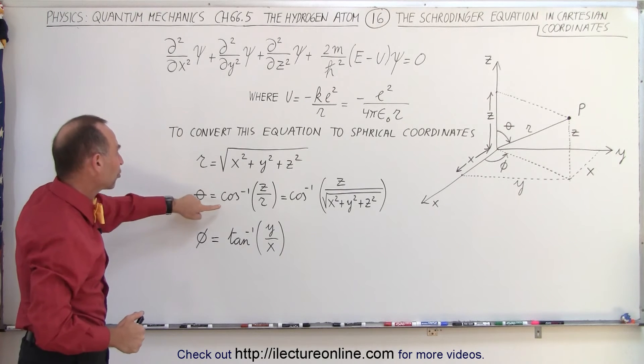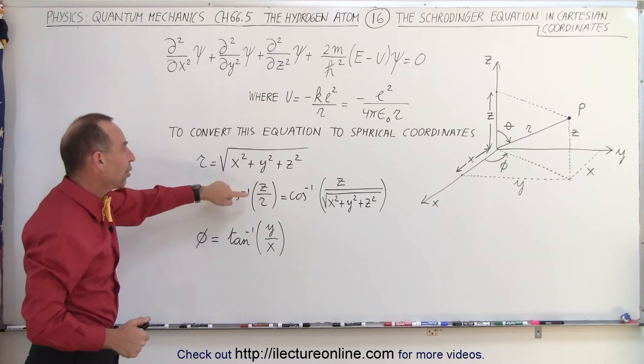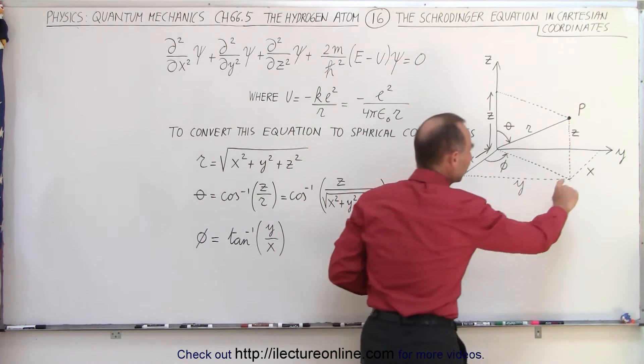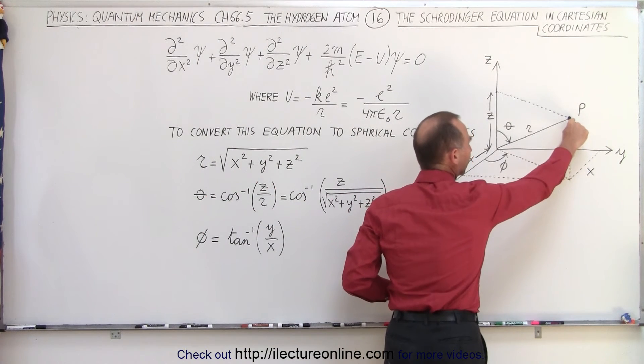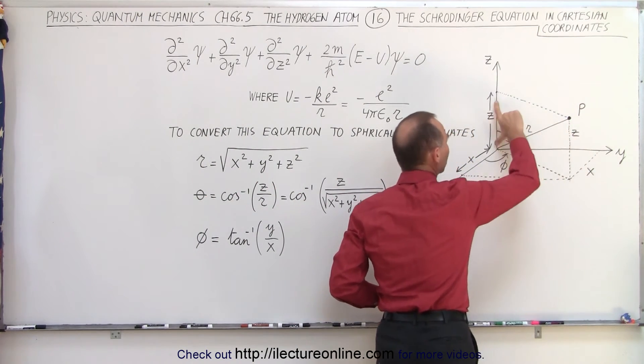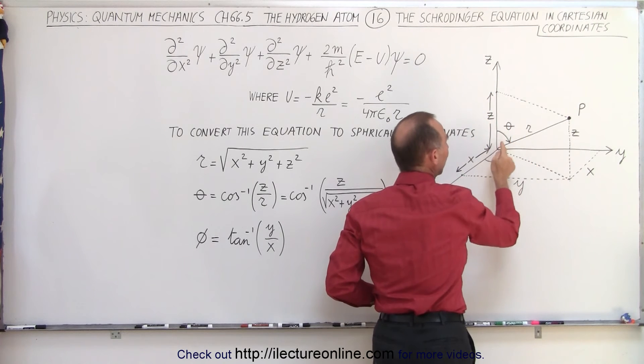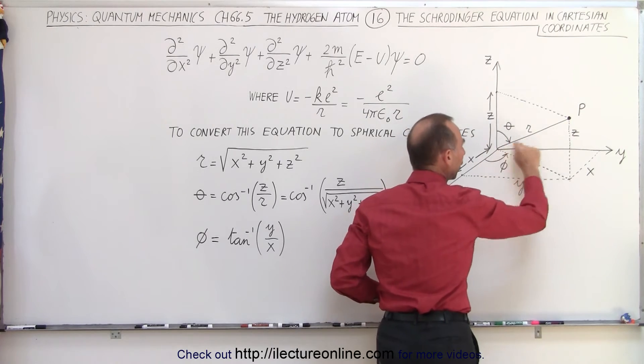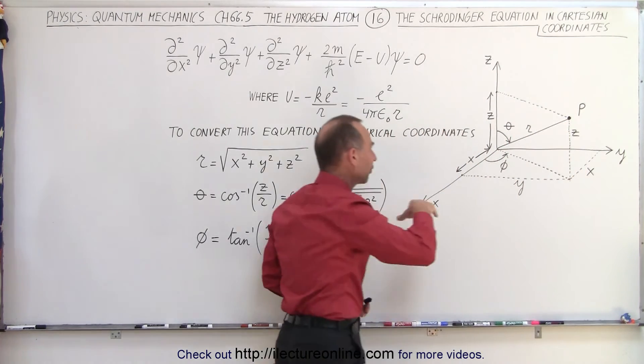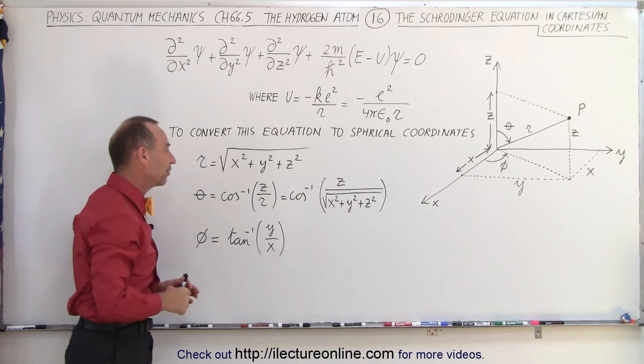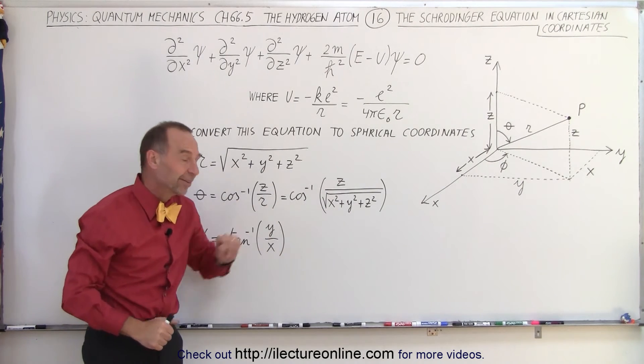Then theta can be described as the inverse cosine of z over r. Now, if you take this distance from the x, y plane to the position of the electron, we take that z, we move it over here, and then we take the cosine of the angle theta, that would be defined as z over r, r being the hypotenuse, and therefore theta is the inverse cosine of z over r.